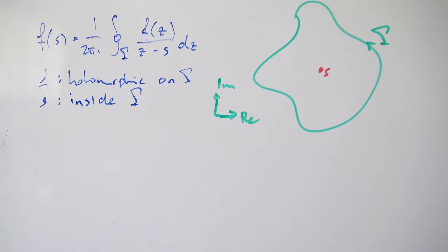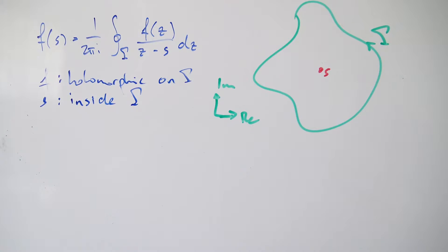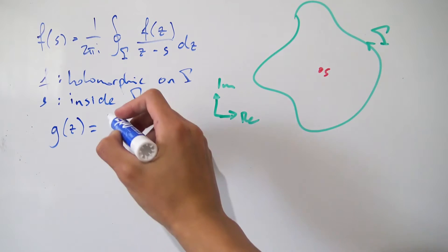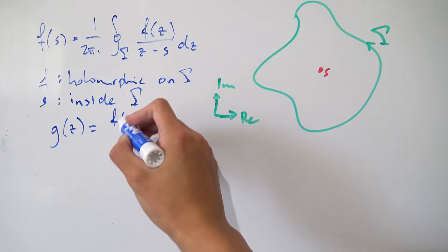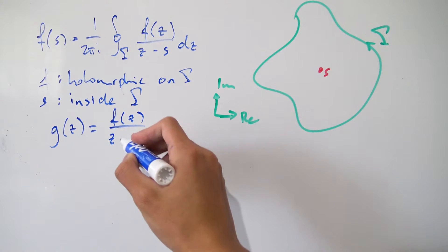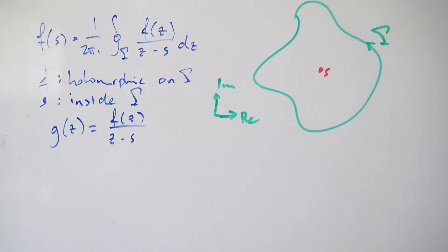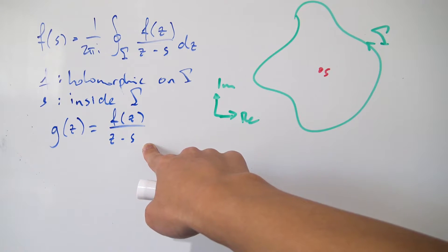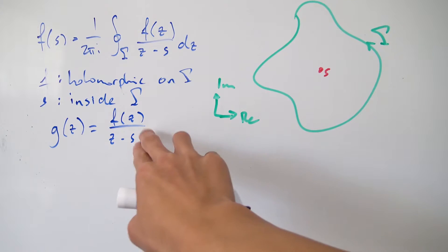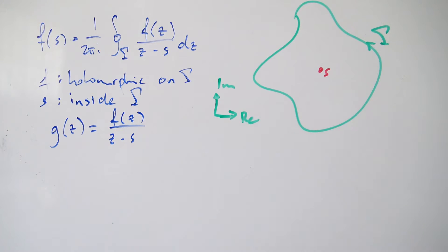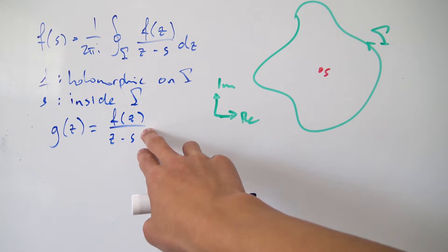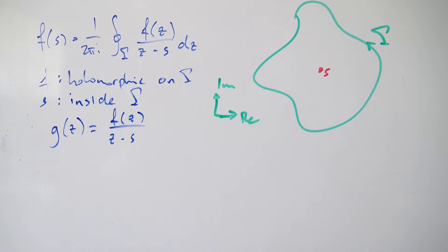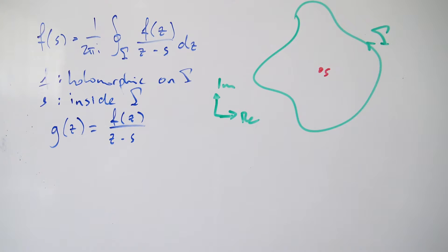To start off this proof, let's consider a new function g(z), defined as f(z) over (z minus s) — the exact same as the integrand. Notice that f is still holomorphic, but we have this denominator z minus s, which can't be zero otherwise it blows up to infinity. So by having this division by (z minus s), we're generating a singularity at the point s.